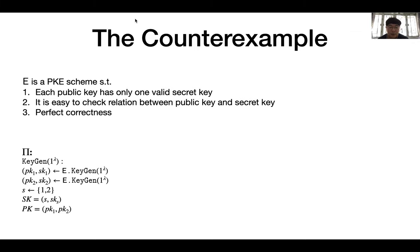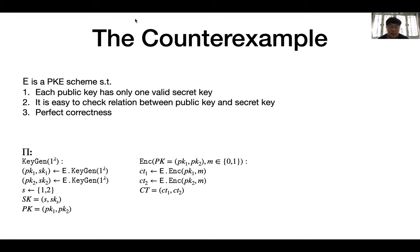The key generation algorithm of the counter-example scheme π will first produce two independent public key and secret key pairs under E. The public key of π will contain both public keys of E, and the secret key of π is exactly one of the two possible secret keys of E. To encrypt a bit, the encryption algorithm will encrypt the message using the encryption algorithm of E with both public keys, and the ciphertext contains both smaller ciphertexts of E. To decrypt a ciphertext, the decryption algorithm will decrypt one small ciphertext with the given secret key.